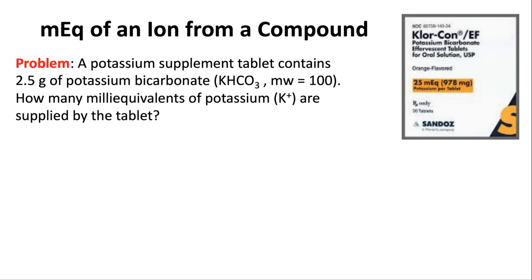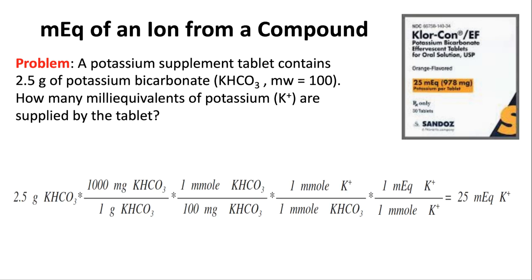Next question: we're determining the milliequivalents of an ion from a compound. A potassium supplement tablet contains 2.5 grams of potassium bicarbonate (KHCO₃) with a molecular weight of 100. We want to know how many milliequivalents of just potassium are supplied. We start with the weight of the compound and work toward the chemical activity of just the potassium ion.